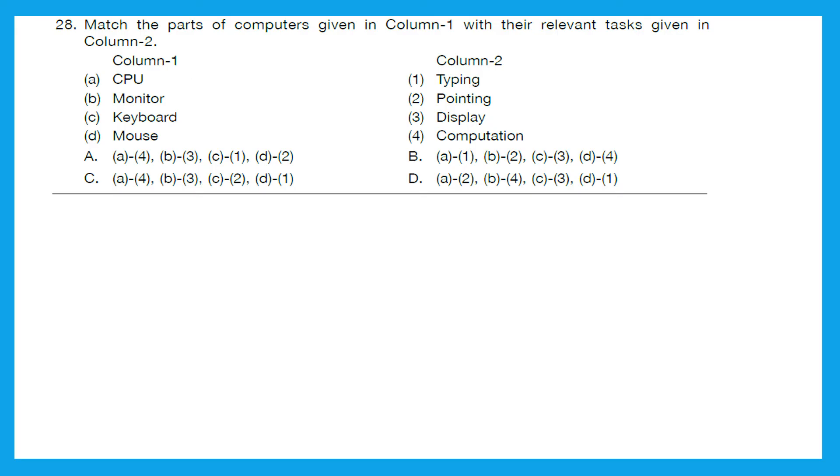Question 28: Match the parts of computers given in column 1 with their relevant tasks given in column 2. Let's do this. CPU - what is the task? It's computation. A matches 4. Monitor - it's display. B matches 3. Keyboard - it's typing. C matches 1. Mouse - it's pointing. D matches 2. A-4, B-3, C-1, and D-2. And the right option is option A.